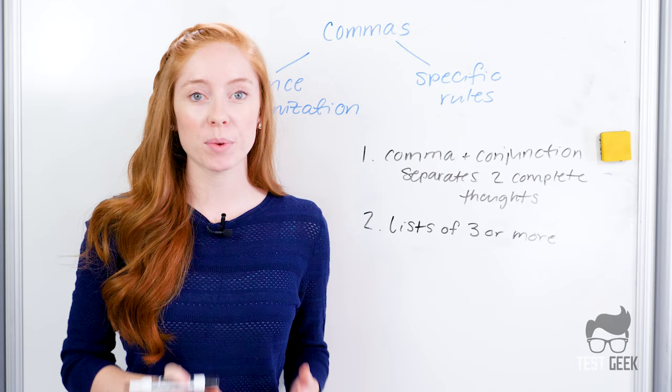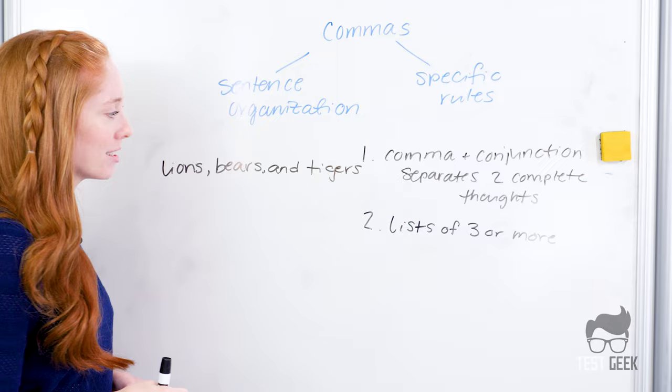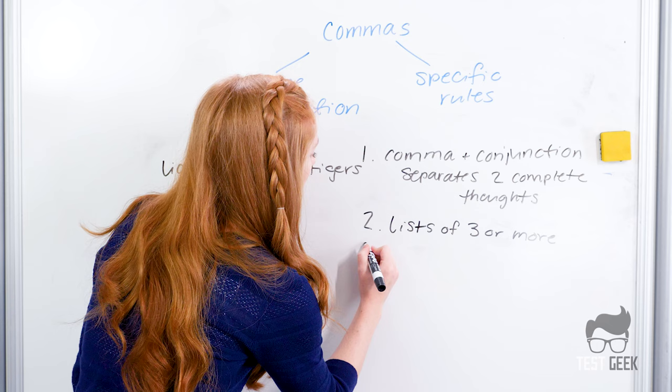The second one is one you've probably heard of before. When we have a list of three or more things, you have to use a comma. So let's say we have lions, bears, and tigers. Okay, so this follows the rule of three or more things, and we have to use commas.